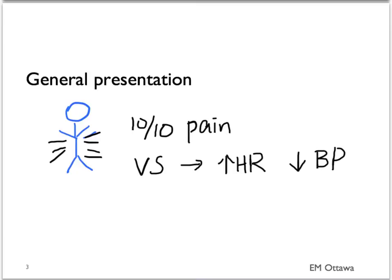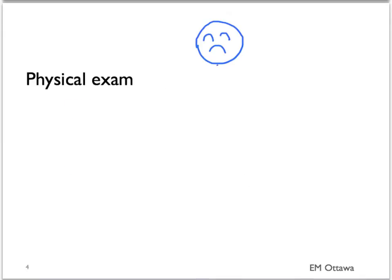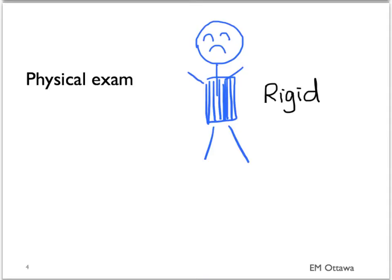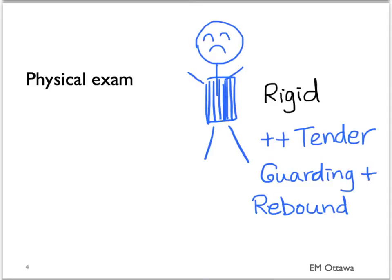They might have a fever. On examination, the patient will be in distress. They may have a board-like rigidity to their abdomen and will not want to move. They will have significant tenderness with superficial palpation. There will be involuntary guarding and significant rebound tenderness. These are sick patients.